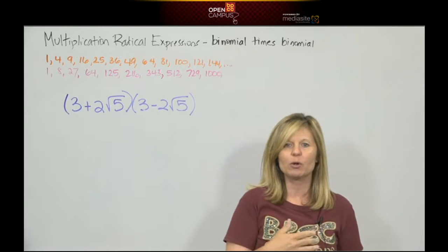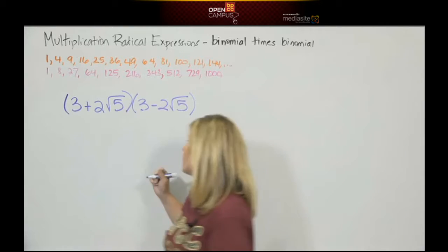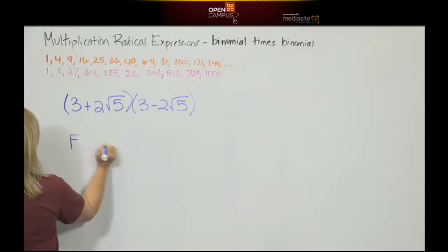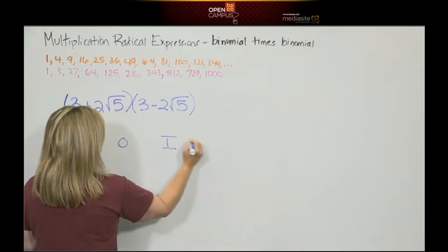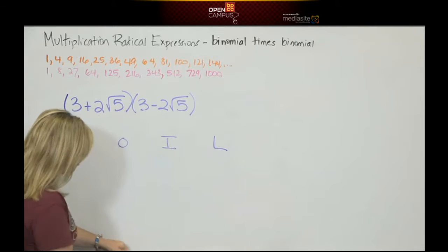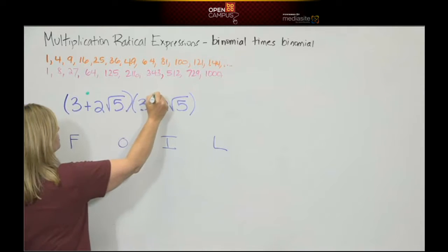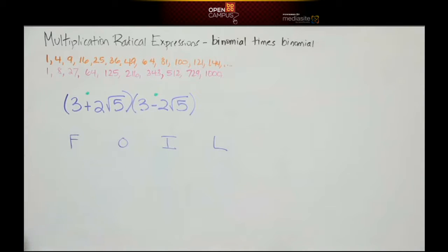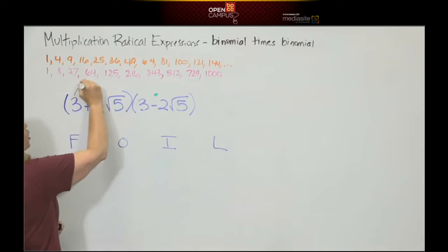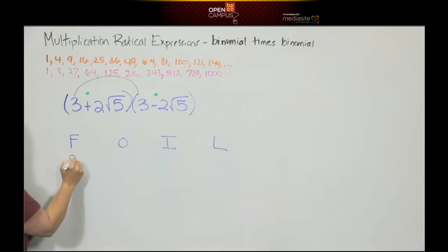So to distribute correctly, we do FOIL. So I'm going to write our letters: first, outer, inner, last. You know me, if we do FOIL correctly, we should make a smiley face. I'm going to put my little eyeballs, and we're going to make our smiley man. So the first comes his eyebrow. First term, 3 times 3 is 9.